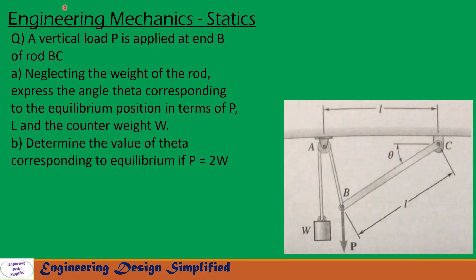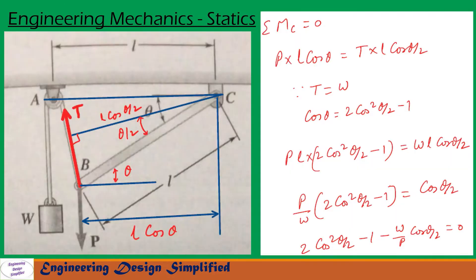Let us see in the coming slides how to solve this problem. First, let us assume the size of the pulley is small compared to other dimensions, so the string and the line drawn from the center of the pulley to B will be coinciding. If that is the situation, then a line drawn from C onto this string will divide triangle ACB into two halves as shown in the figure.